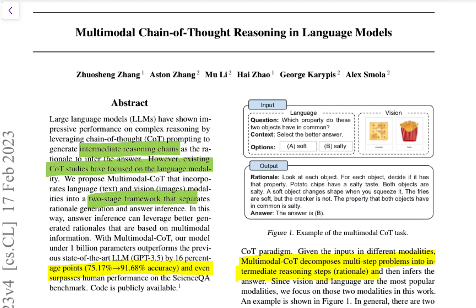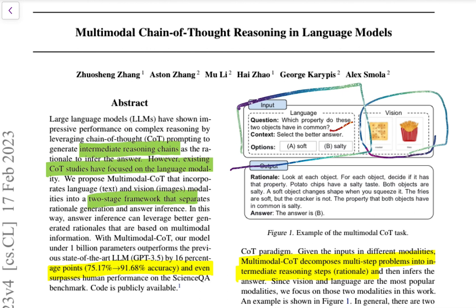The method uses a two-stage framework that separates rational generation and answer inference. When prompting the language model, you provide both a question and a vision input. The model first generates a rationale for answering the question before generating the final answer. The paper shows that this rational generation process actually improves answer generation performance as well, which is very interesting. They also show this system performs around 20% better than the previous language-only model, which is a huge improvement on the ScienceQA dataset.